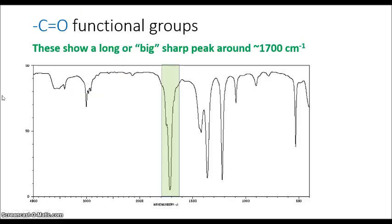Carbonyl functional groups show a long or big peak around 1700 cm⁻¹. Carbonyl functional groups could be from carboxylic acids, esters, aldehydes, ketones, and acyl chlorides. All of these will show a peak around 1700.